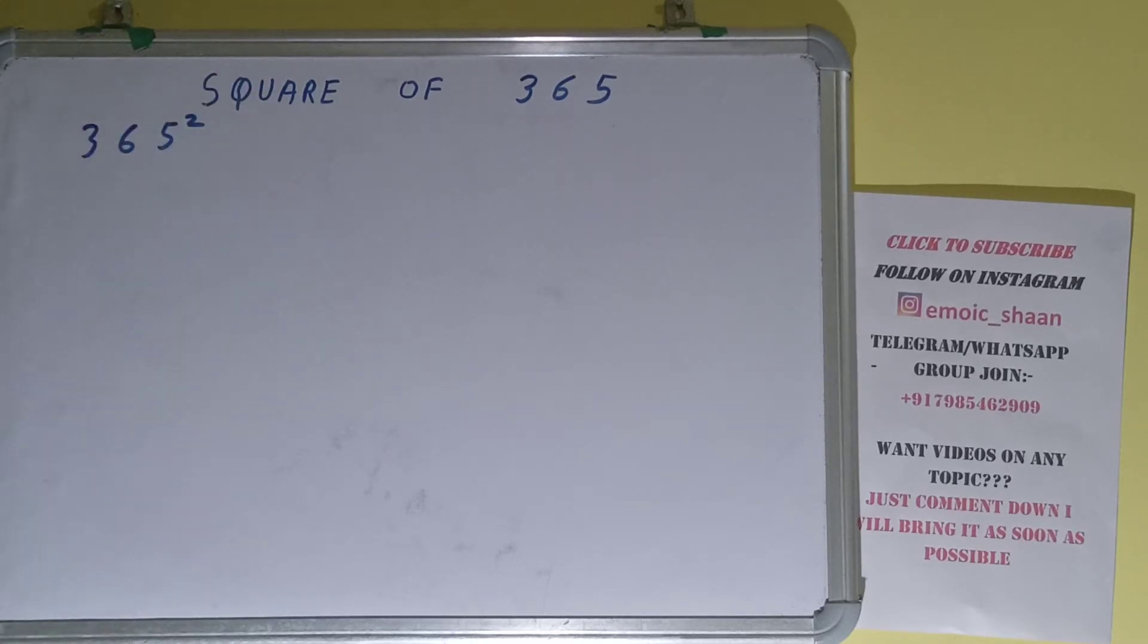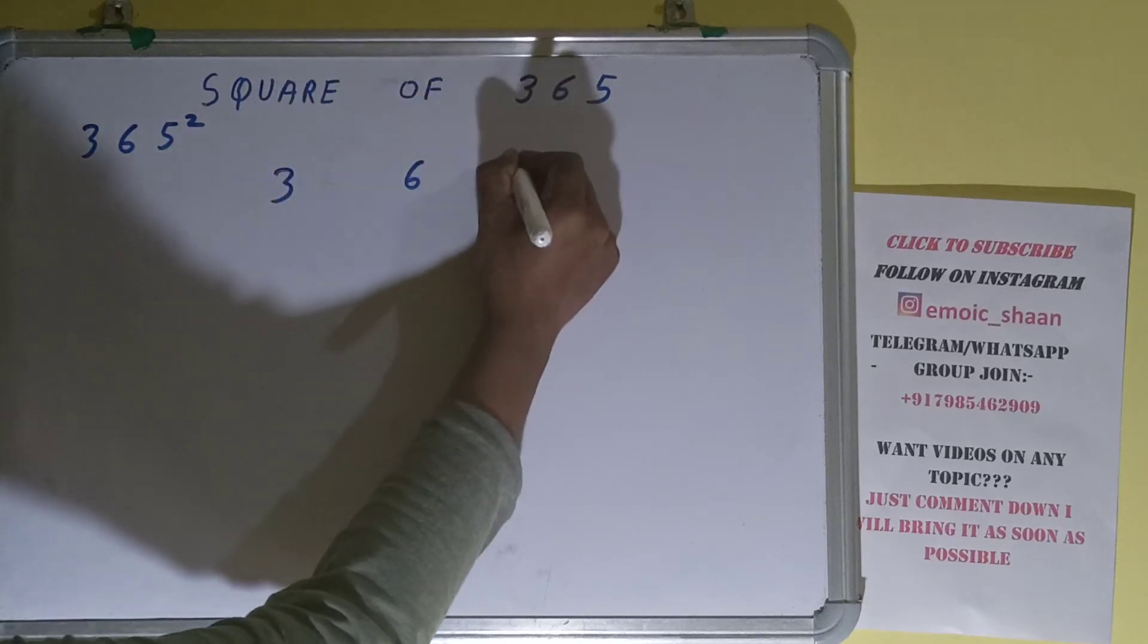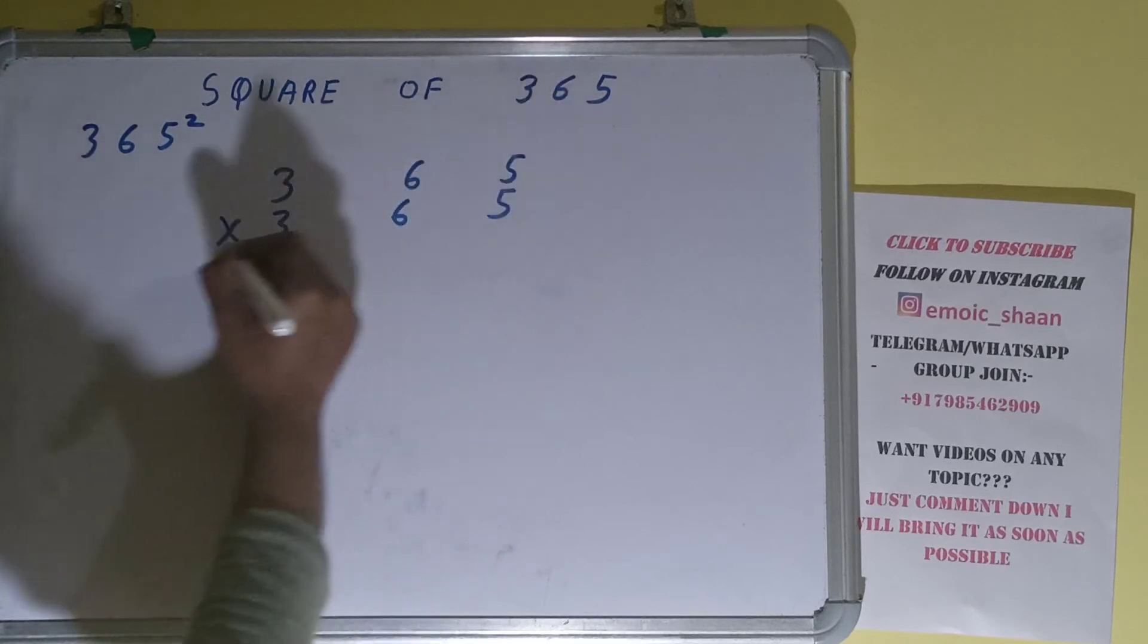Okay, now coming on to the solution. Square basically means multiplying the number by itself, and the number here is 365. To find square of it, we need to multiply by itself, that is 365, and do the multiplication.